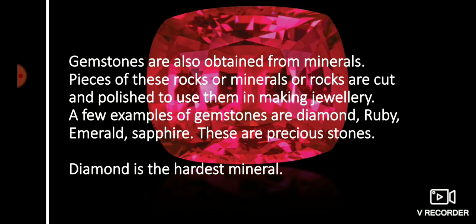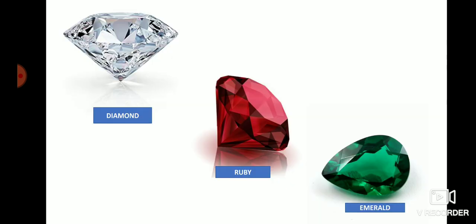We get such stones from deep inside the earth. Diamond is the hardest mineral on the earth. Here you can see three precious gemstones: diamond, ruby, and emerald. The colors of ruby and emerald come from the minerals present in them. These are cut in such a way that they shine.